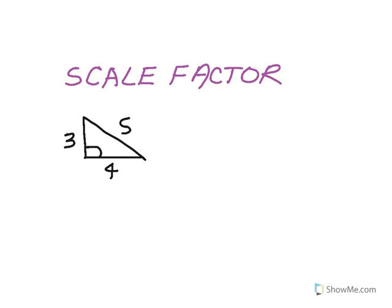The next vocabulary term is a scale factor. A scale factor between two polygons is the proportion of the side lengths. So let's say I have a little right triangle. It's a 3-4-5 right triangle. If I were to blow that up and double each side length, I would end up with a 6-8-10 triangle.